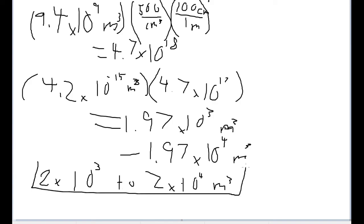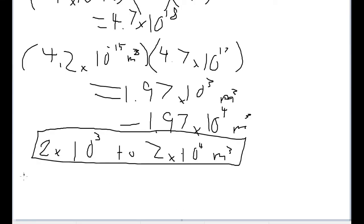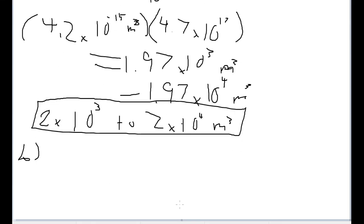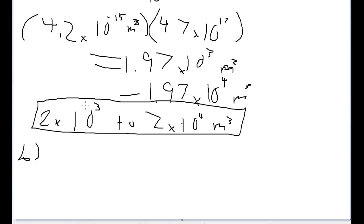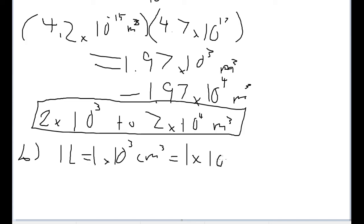That is our range for the volume of water in the cylinder. Now for Part B: how many one-liter pop bottles would that water fill? One liter is equal to 1,000 cubic centimeters, or in terms of meters, about one-thousandth of a cubic meter — that is 1 times 10 to the negative third cubic meters.